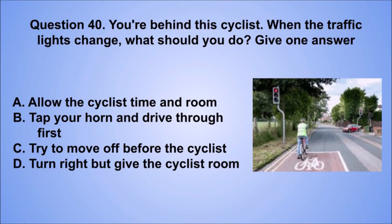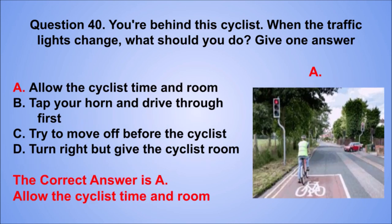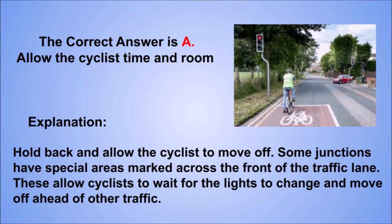Question 40. You're behind this cyclist. When the traffic lights change, what should you do? Give one answer. A. Allow the cyclist time and room. B. Tap your horn and drive through first. C. Try to move off before the cyclist. D. Turn right but give the cyclist room. The correct answer is A, allow the cyclist time and room. Hold back and allow the cyclist to move off. Some junctions have special areas marked across the front of the traffic lane, allowing cyclists to wait for the lights to change and move off ahead of other traffic.